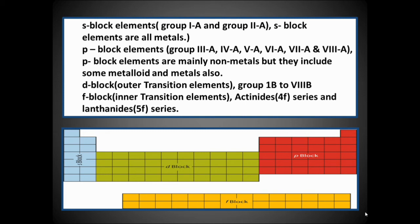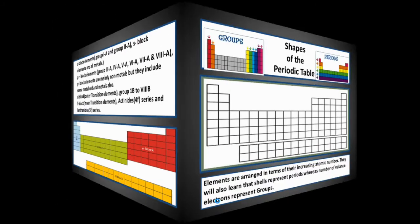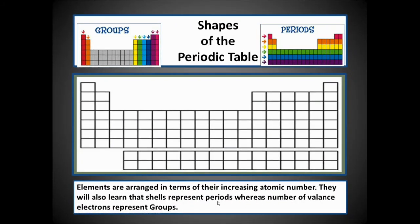F-block elements are considered the inner transition elements — actinides (4f series) and lanthanides (5f series). In the periodic table color scheme, S-block elements are represented in blue, P-block in pinkish or brownish color, D-block in green, and F-block in yellowish color.